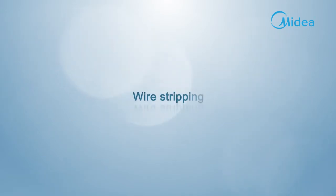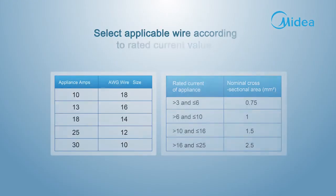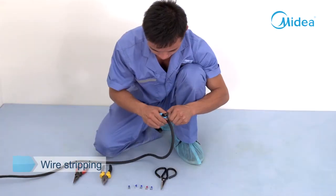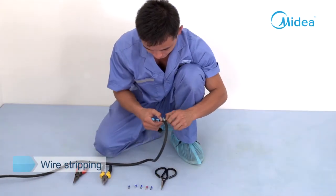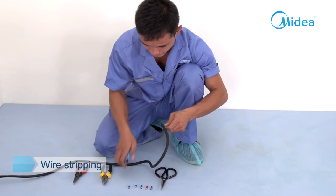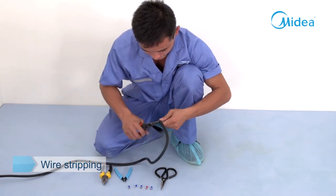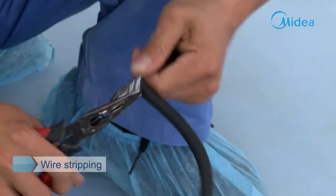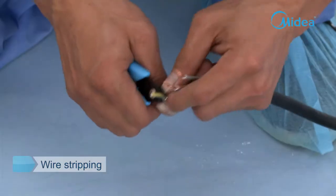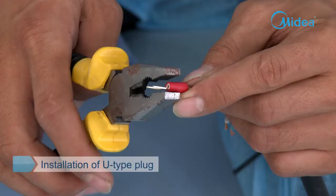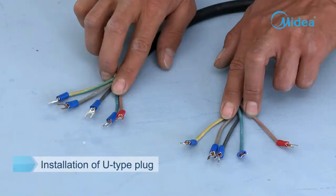Wire stripping. Select applicable wire according to the rated current value; two common specifications are shown in the figure. Strip the rubber skin at both ends of the connecting wire to uncover the wire core. Use a wire stripper to strip the wire core. Use a wire crimper to clamp the U-type plug, and pay attention to distinguish the L-wire from other wires.